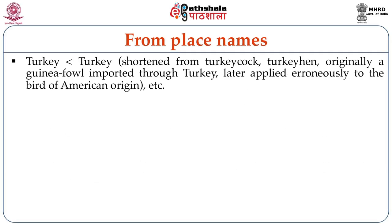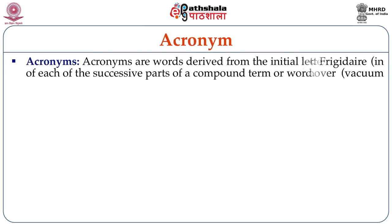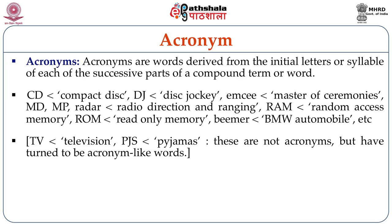'Turkey' is shortened from 'Turkey Cock' or 'Turkey Hen' — originally a guinea fowl imported through Turkey, later applied erroneously to the bird of American origin. From brand names like Coke and Cola we get Coca-Cola; 'Fridge' from Frigidaire; 'Kleenex' for tissue; Xerox; Hoover, etc. Acronyms are words derived from the initial letters or syllables of each successive part of a compound term — for example, CD for Compact Disc and DJ for Disc Jockey.